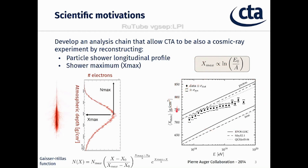In this work we are focused on the reconstruction of the Xmax observable. In the right plot you can see the importance of this observable — the average Xmax is plotted as a function of energy. This is important because this observable can tell us how heavy the composition of cosmic rays are.